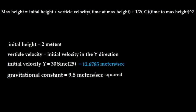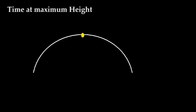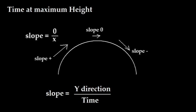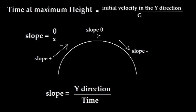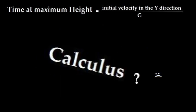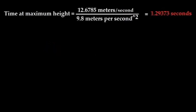The only unknown we have is time at maximum height. To solve for time at maximum height, we discover that the trajectory is like a parabola, which is dictated by a slope. Slope in this case is equal to distance in the Y direction over time. When the slope of the object is zero, the object has reached maximum height. When this is the case, time at maximum height equals the initial velocity in the Y direction over the gravitational constant. Proving this relationship would require derivatives and calculus, which I do not know. So I will just plug in the values and solve for the time at maximum height, which is equal to 1.29373 seconds.